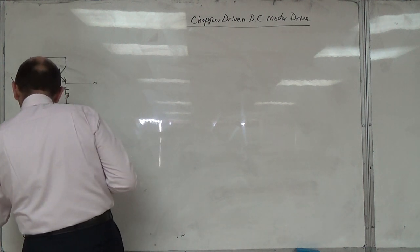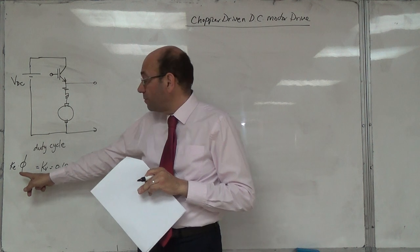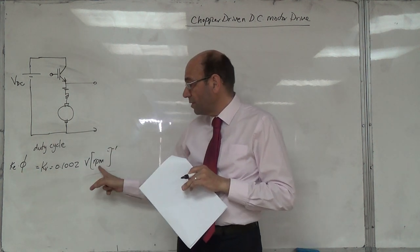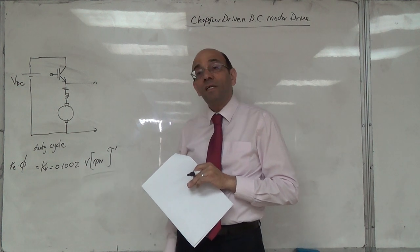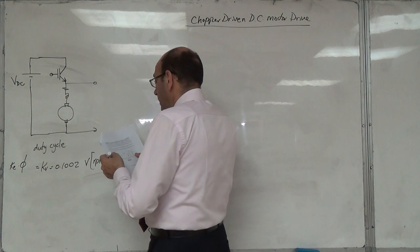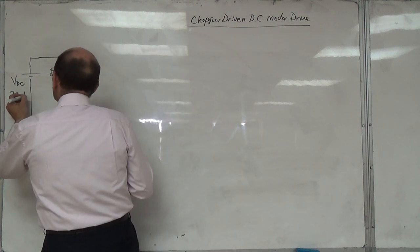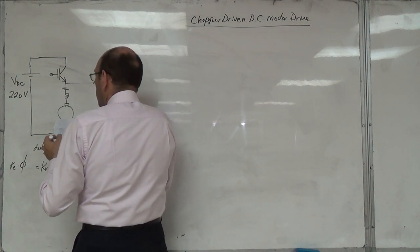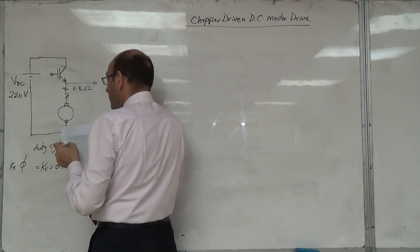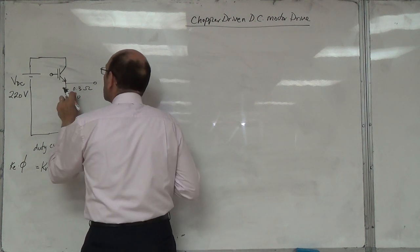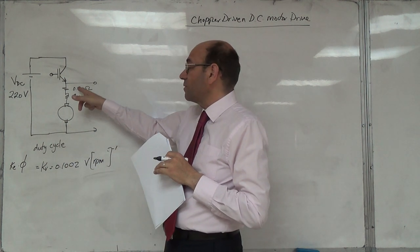And KV here, Ke phi here. KV per RPM, and here this is 220 volts DC. RA is 3 ohms, LA is 30. I'm not going to use this but it will give me this.